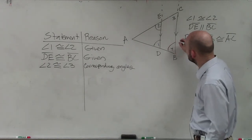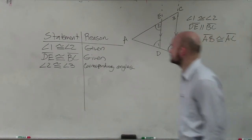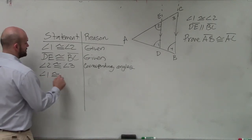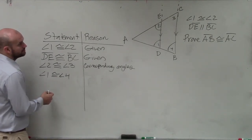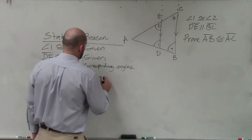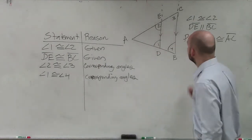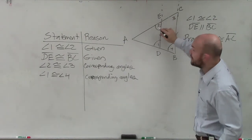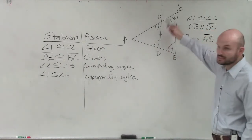We could also say that angle 1 is congruent to angle 4 — those are also corresponding angles. So now we know that angle 2 and angle 3 are equal to each other, and angle 1 and angle 4 are equal to each other, because these are corresponding angles.